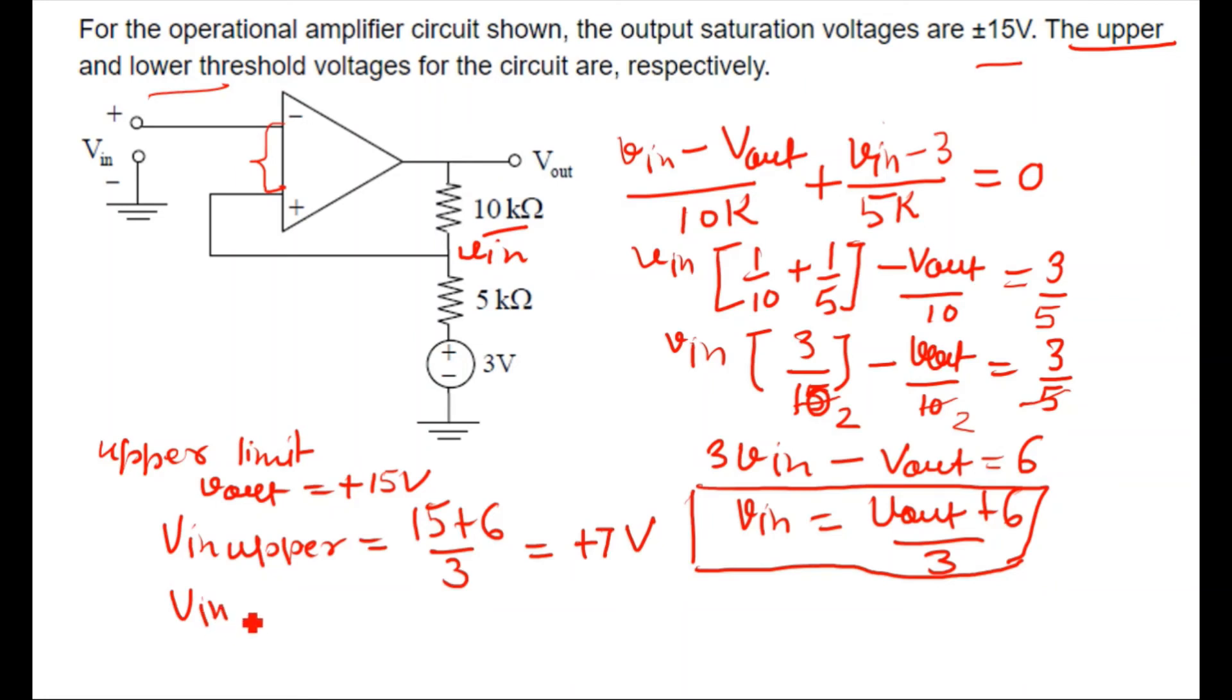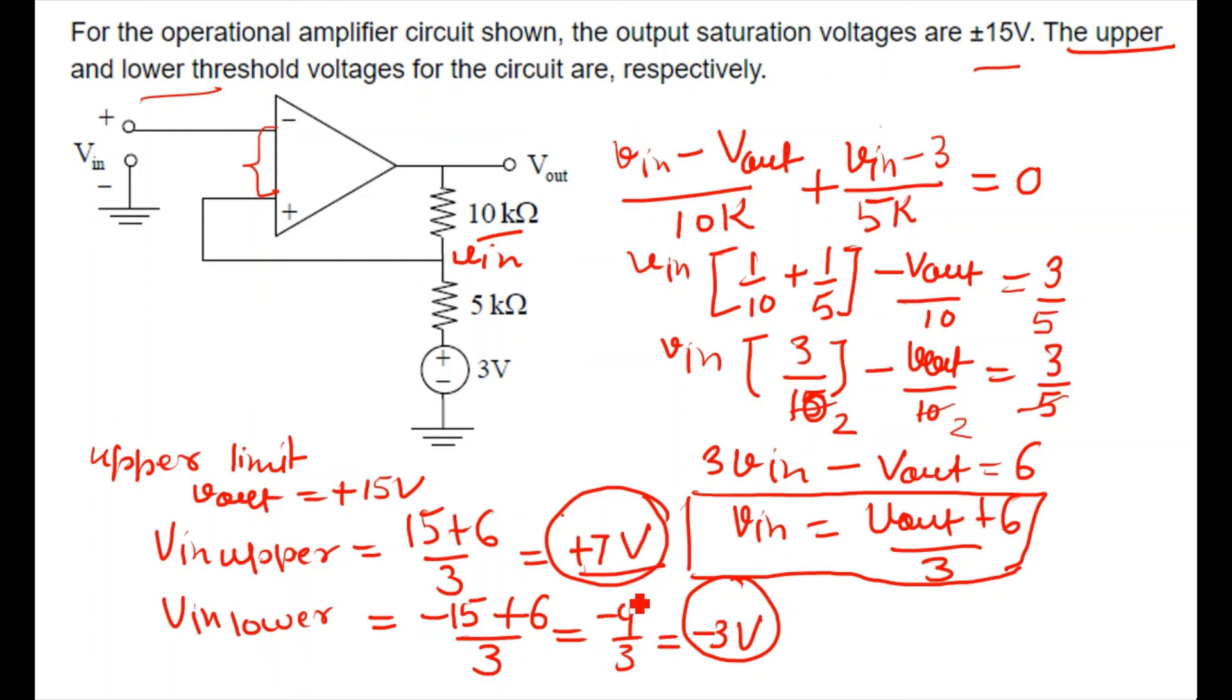So it will become plus 7 volts. Similar way, you will find the V_in lower. Lower limit, it will become minus 15. For lower limit, V_out will be minus 15. So minus 15 plus 6 divided by 3, it will give you minus 9 by 3, and the answer will be minus 3.